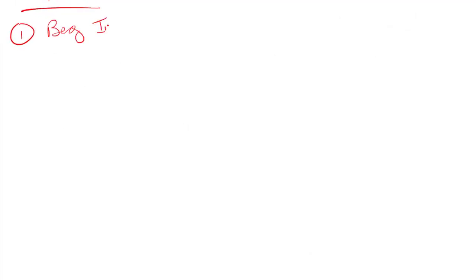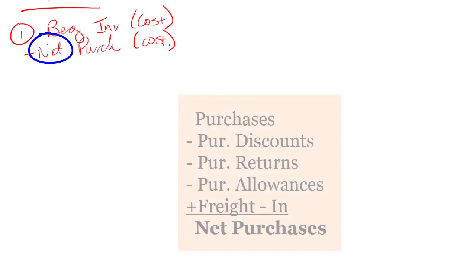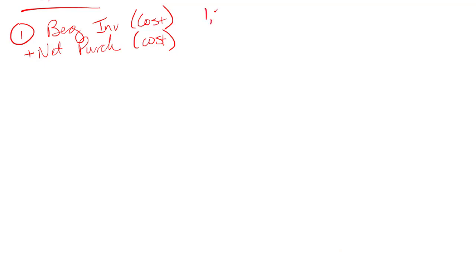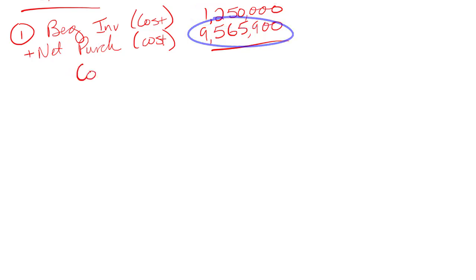Step one: beginning inventory at cost plus net purchases — and note it is net purchases, not gross. Take out discounts, returns, allowances, etc. Beginning inventory was $1.25 million; net purchases were $9,565,900. Adding those together gives cost of goods available for sale: $10,815,900. Next I need to figure out cost of goods sold, but first I need the sales markup. Since I only have the cost markup, I jump down to convert it.